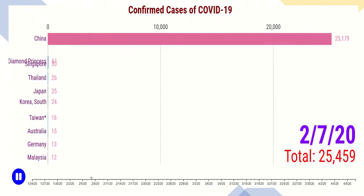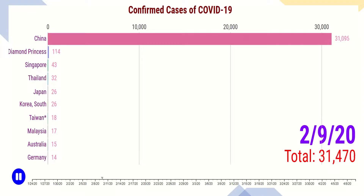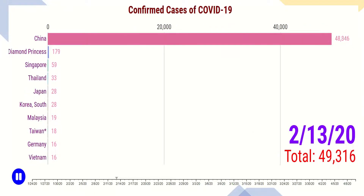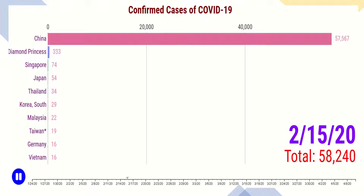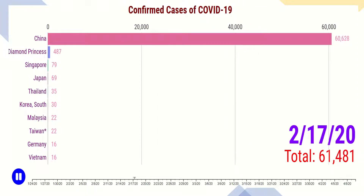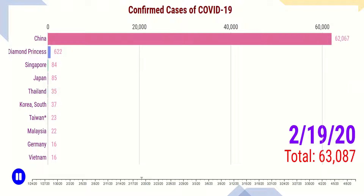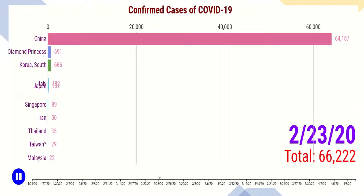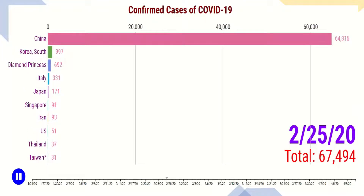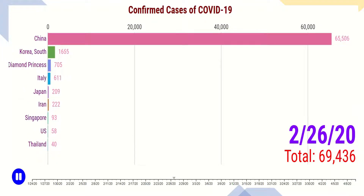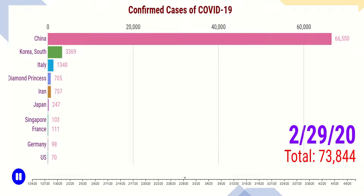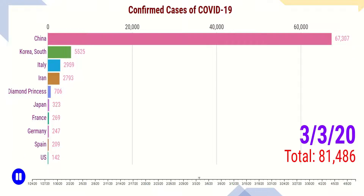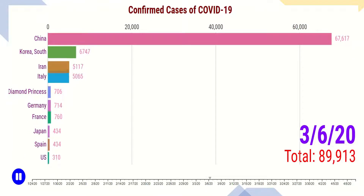The confirmed cases of coronavirus started rising in other countries in early February. After China, South Korea started reporting a rising increase in early March.